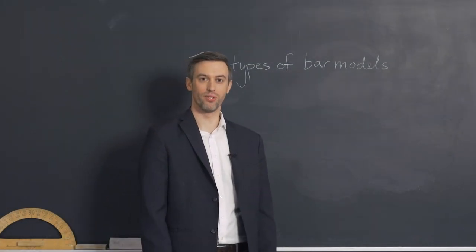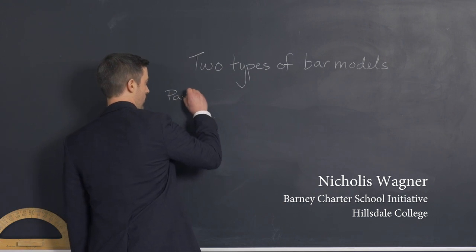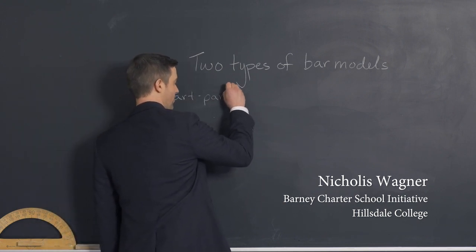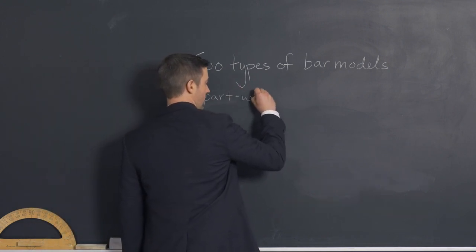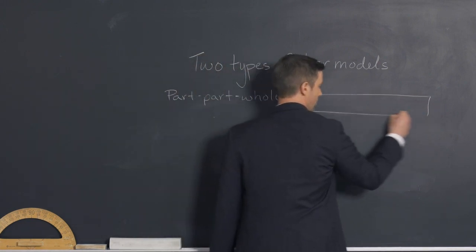I'm going to introduce the two types of bar models. We have the part-part-whole. Some people refer to it as part-whole, and it is a single large quantity with the total listed on top.